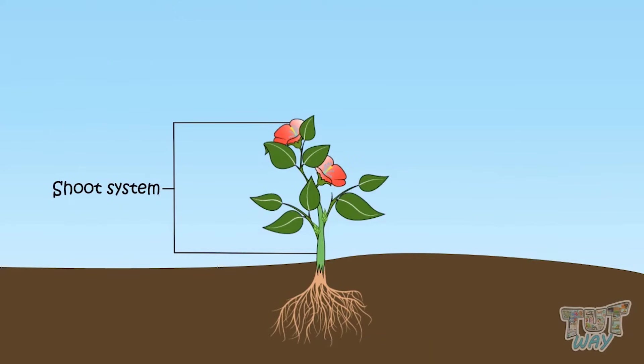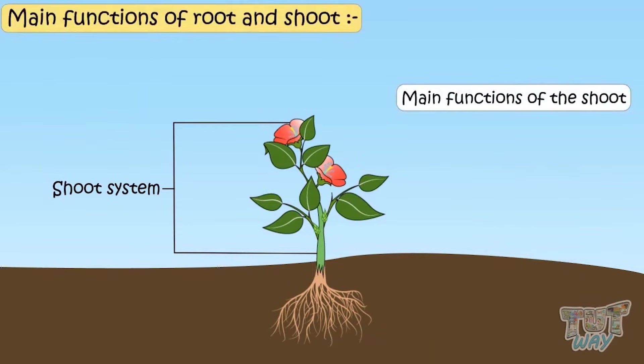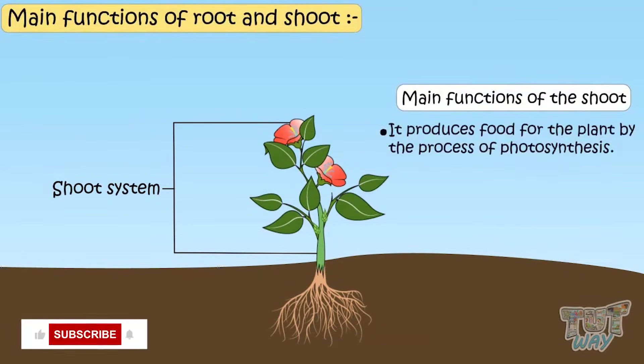The main function of shoot is to produce food for the plant by process of photosynthesis.